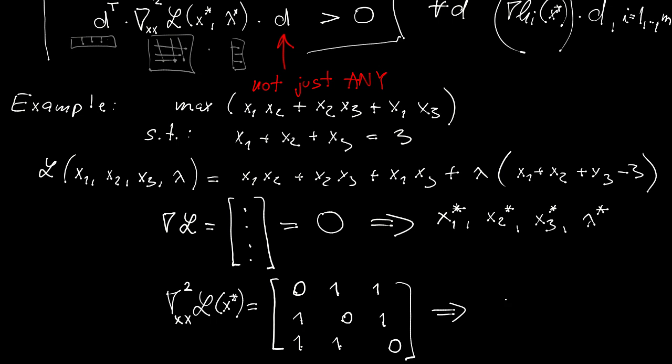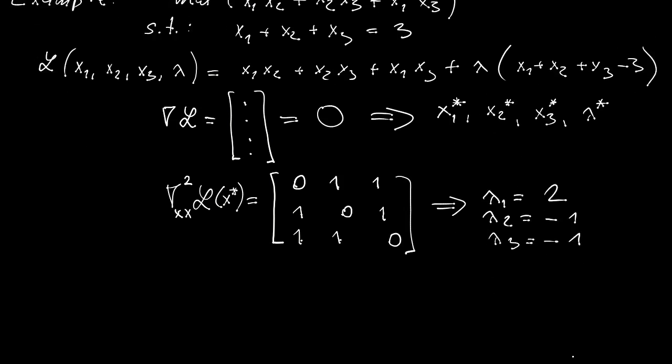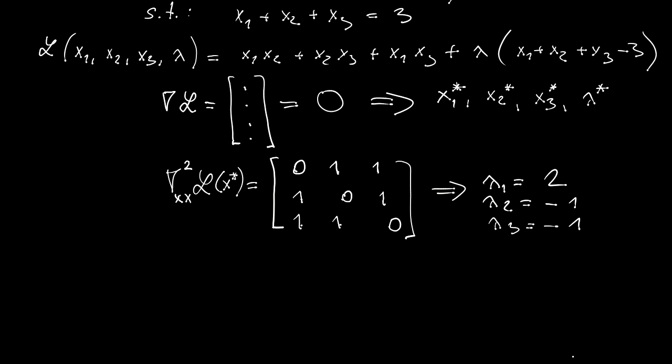For such matrix, its eigenvalues are 2, minus 1, minus 1. This means that the Hessian matrix is indefinite, and the problem seems that it has no minimum or maximum at the critical point. It's a subtle point.